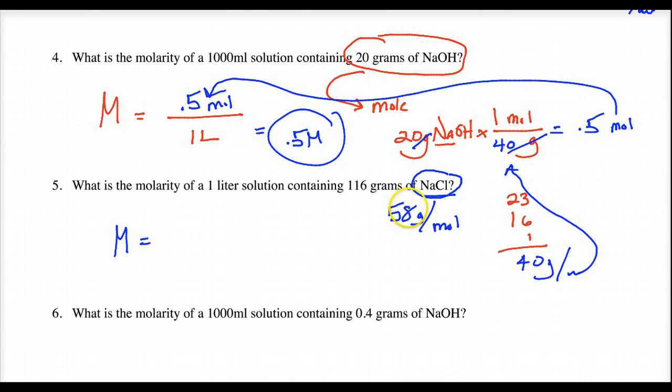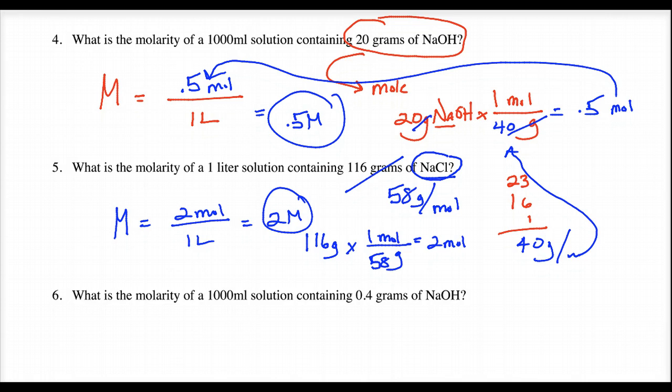Isn't it 116? In this case, isn't this 116 grams? Get rid of grams. I know it's 58 grams per one mole. I get 2 moles. That goes on top here. And I divide by 1 liter. I get, my friends here, a 2 molar solution.